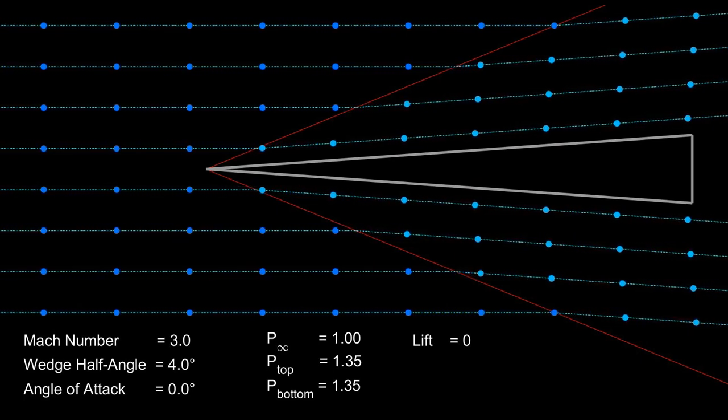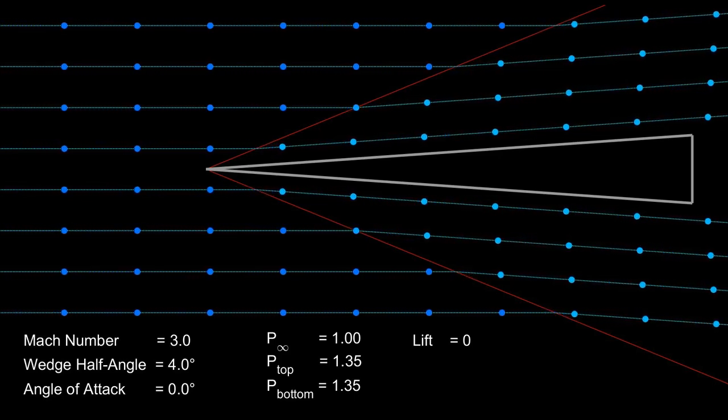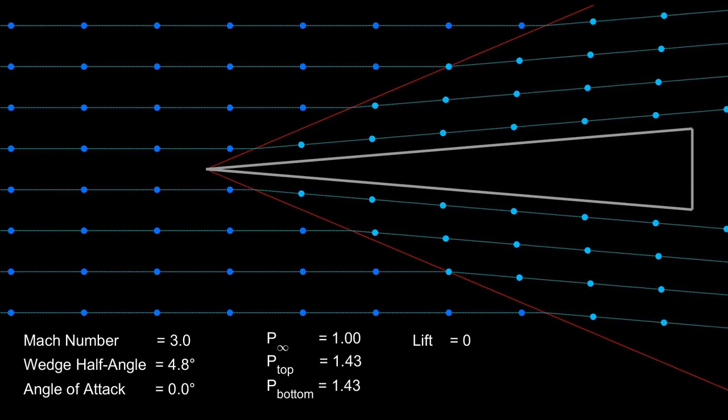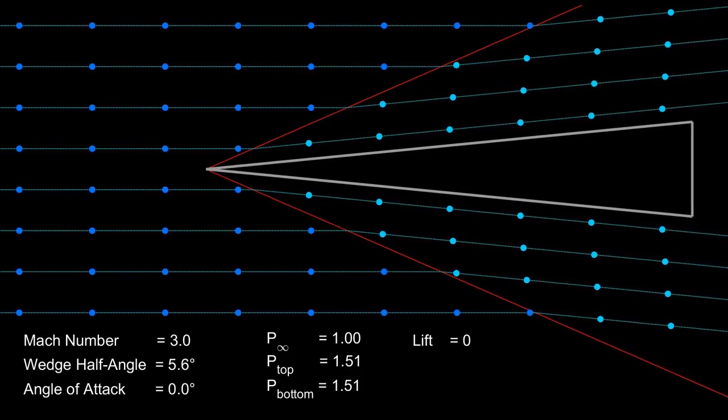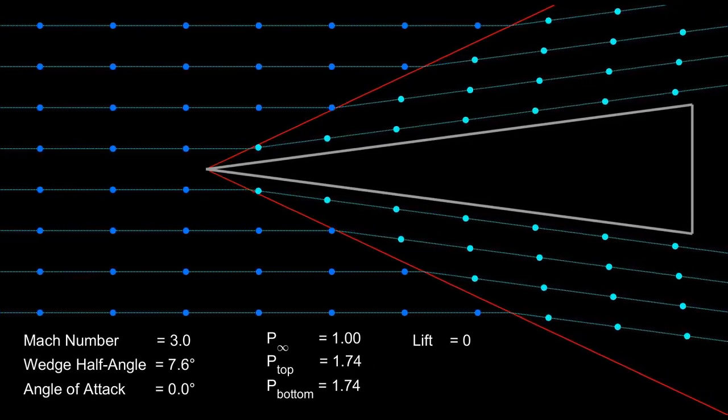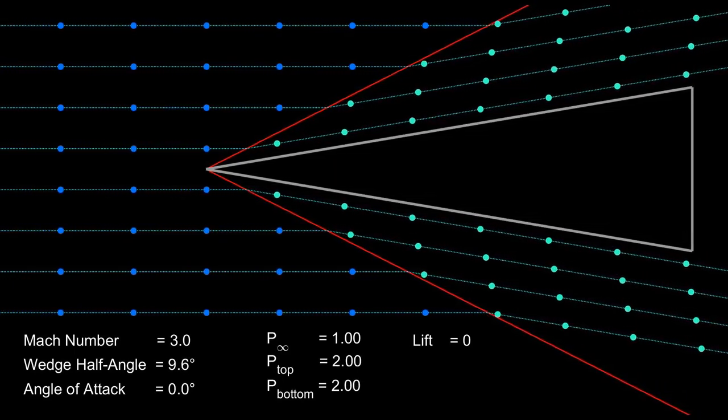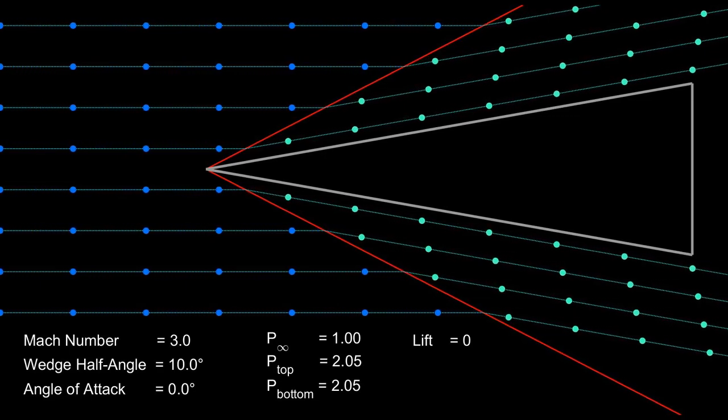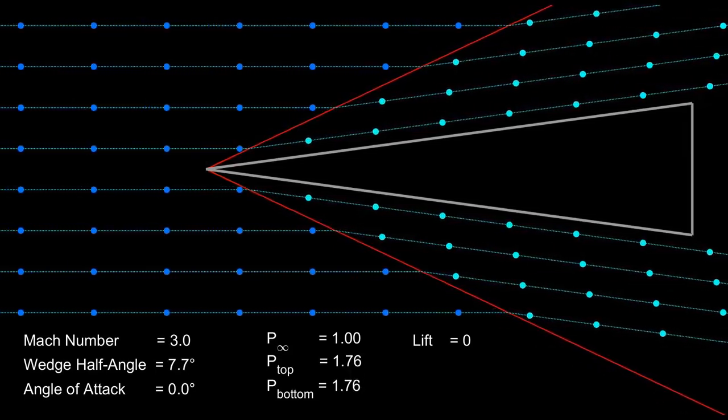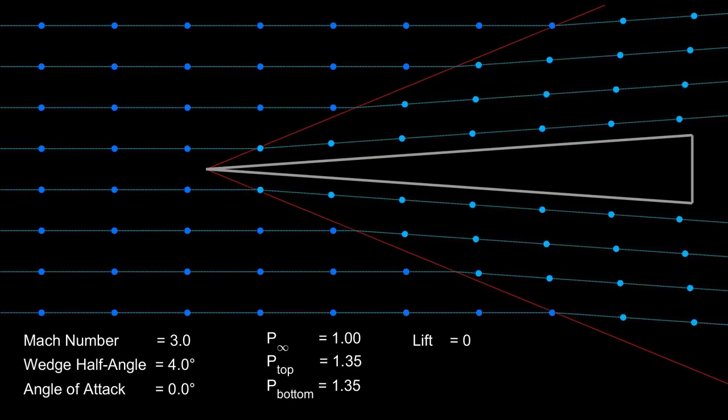Now we're going to see what happens to the oblique shocks, streamlines, and pressure regions, as we vary the Mach number, wedge angle, and angle of attack. As we increase the wedge angle, both the flow deflection angle and the oblique shock angle increase. This increases the shock strength and post-shock pressure, and also increases the frontal area of the vehicle exposed to the incoming flow. Both of these effects increase the vehicle's drag, so for hypersonic flight, we want the thinnest vehicle body, which can still fit all the components inside. Wedge angles of 5 to 10 degrees are typical.